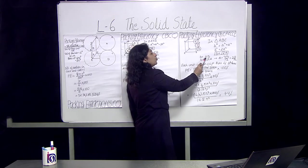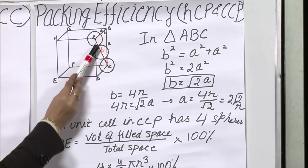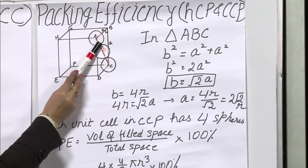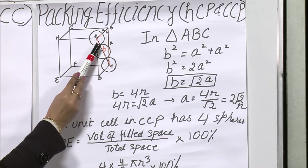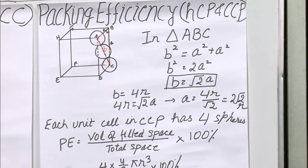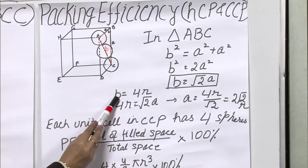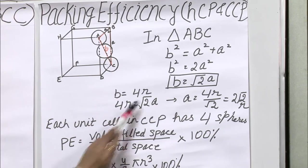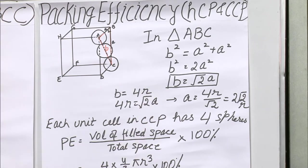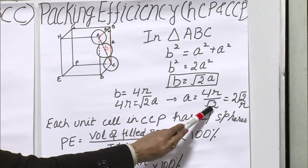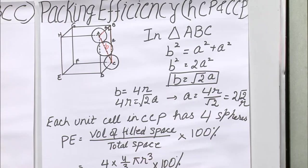Applying the Pythagorean theorem: B² = A² + A², so B = √2·A. Also, B = 4R because along the face diagonal there is half an atom (R), then a full atom (2R), then another half atom (R), totaling 4R. So 4R = √2·A, giving A = 4R/√2 = 2√2·R.